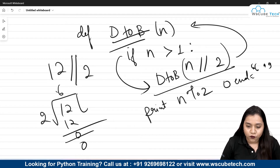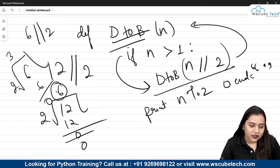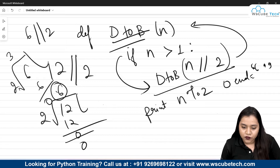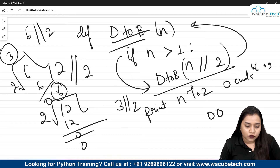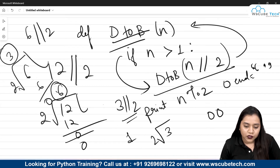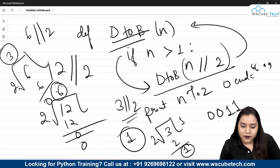Tracing through with 12: d_to_b(12) → d_to_b(6), remainder 0. d_to_b(6) → d_to_b(3), remainder 0. d_to_b(3) → d_to_b(1), remainder 1. The last remaining value is 1. So reading from first to last the output is 1, 1, 0, 0, not 0, 0, 1, 1. This is how the recursion builds the binary string.